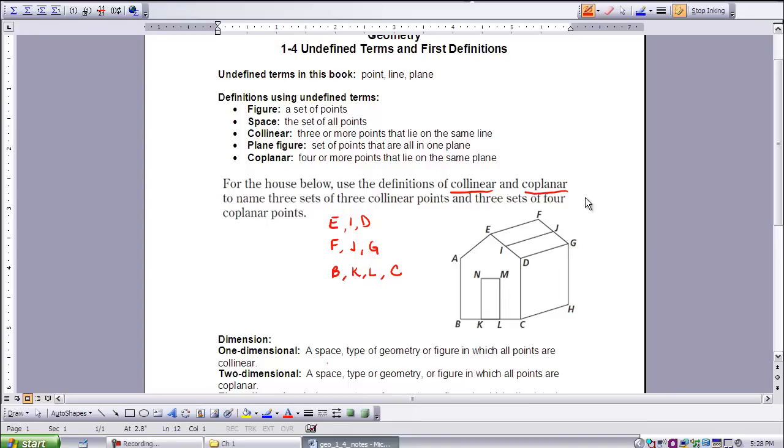The next thing I'd like you to do is find a set of coplanar points. Remember, a plane is a flat surface that has no boundaries. So thinking of a flat surface, I want you to think maybe about the sides of the house and find the points that make up the side of that house. Stop the video and start it again when you are ready.